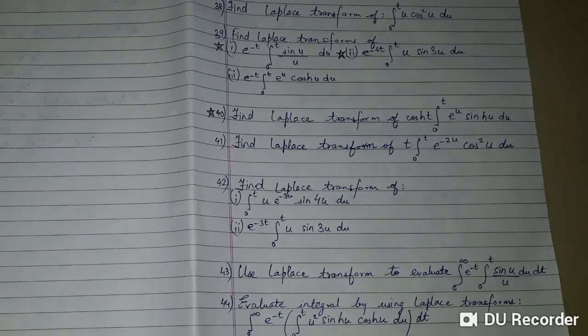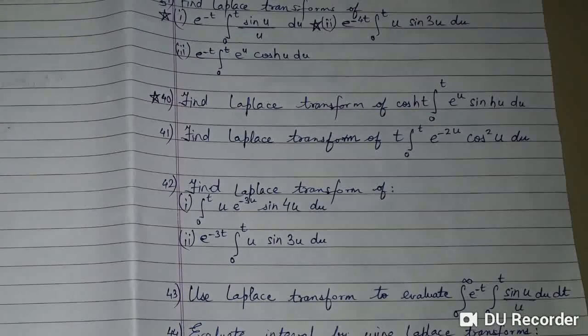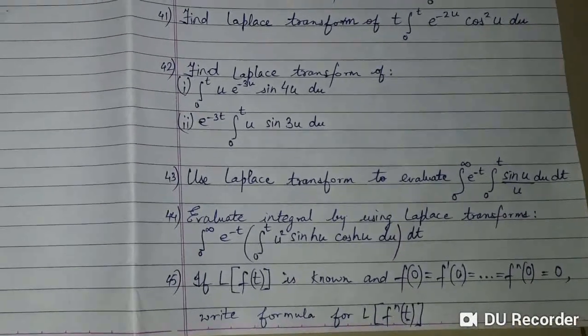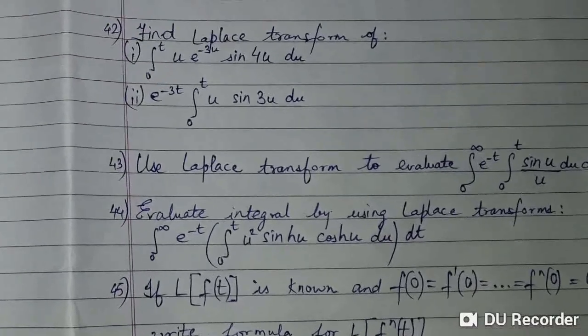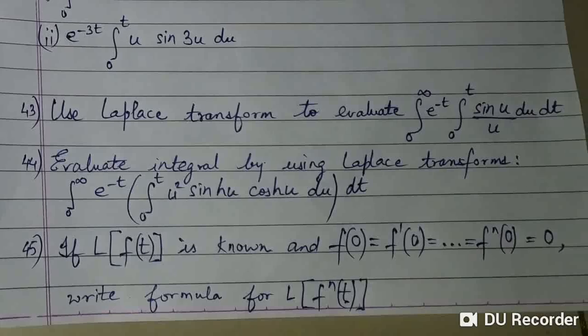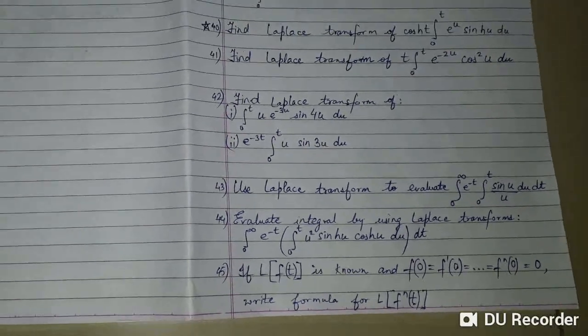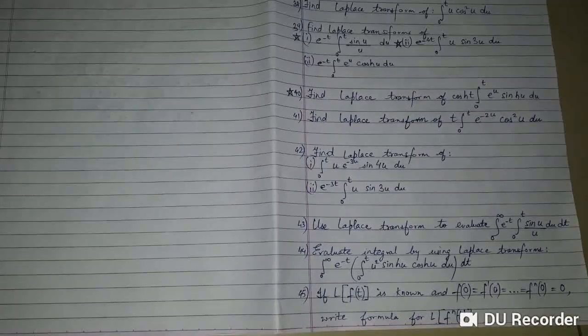40, 41, 42, we have question number 1 and question number 2. You can pause the video and see the questions. I am trying to zoom as much as possible so that you can see those questions clearly. Question number 43, question number 44, and question number 45. These are questions from 38 to 45.